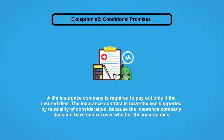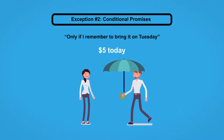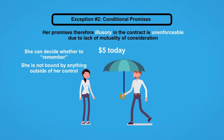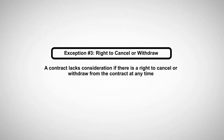Most insurance contracts work in a similar manner. A life insurance company is required to pay out only if the insured dies. The insurance contract is nevertheless supported by mutuality of consideration because the insurance company does not have control over whether the insured dies. On the other hand, if Cindy had agreed to give Bobby an umbrella only if she remembers to bring it on Tuesday, the occurrence of the condition is entirely within Cindy's control. Therefore her promise is illusory and the contract is unenforceable due to lack of mutuality of consideration.